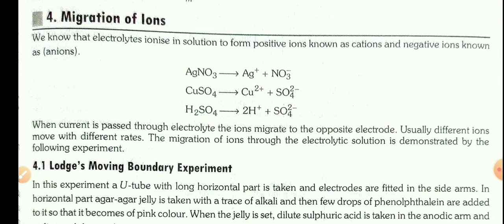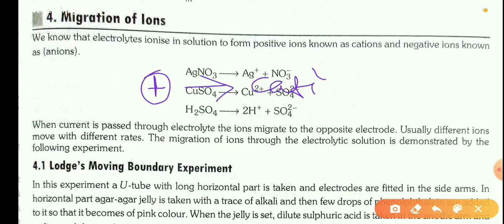As we know, electrolytes ionize in solution to give positive and negative ions. These ions are called cations and anions. Positive ions are called cations and negatively charged ions are called anions.